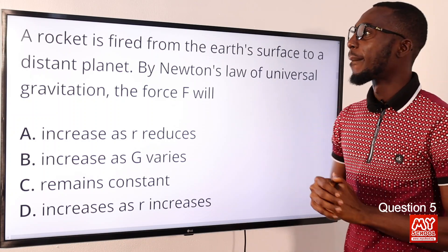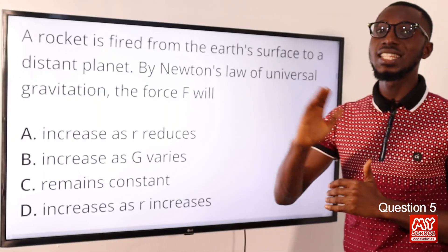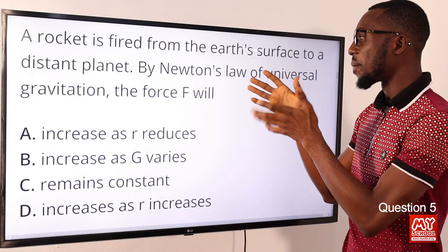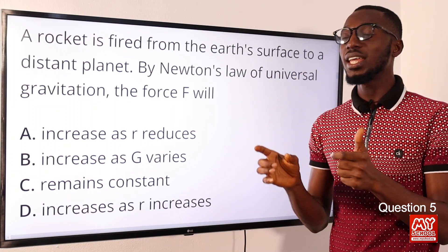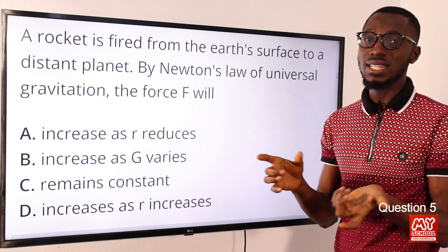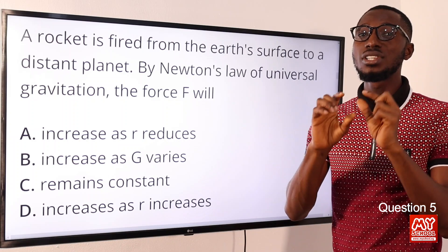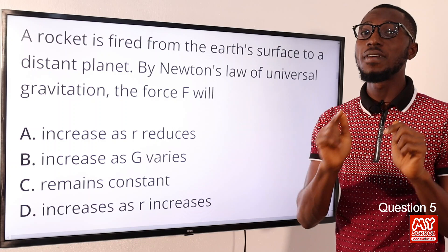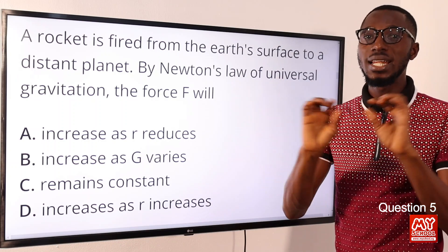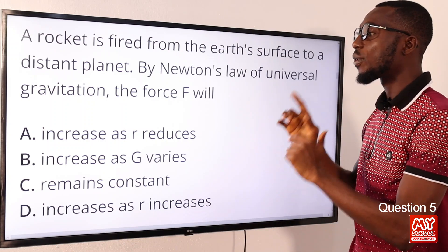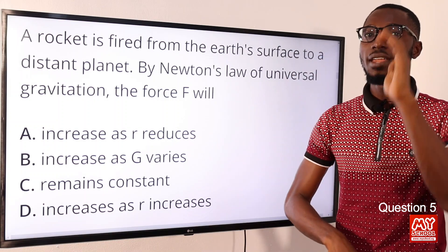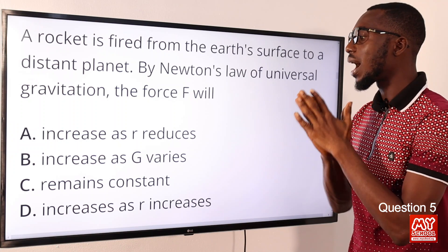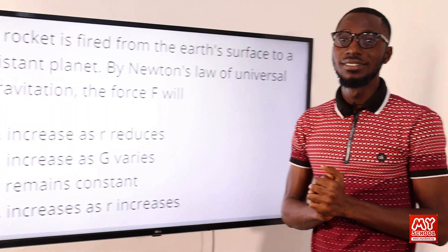Question five: a rocket is fired from the earth's surface to a distant planet. By Newton's law of universal gravitation, the force F equals the product of masses m1 and m2 divided by r squared. This means force is inversely proportional to the square of the distance apart, so as force increases, the distance reduces. The correct option is option A.